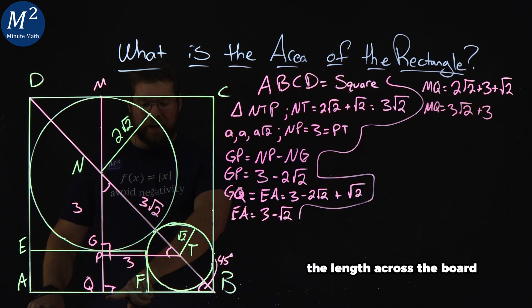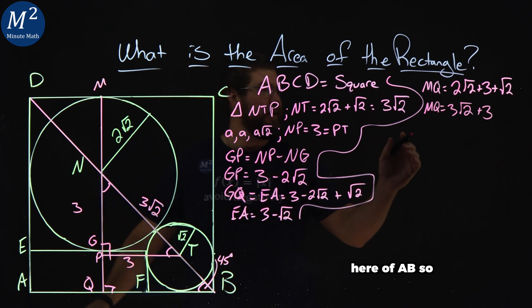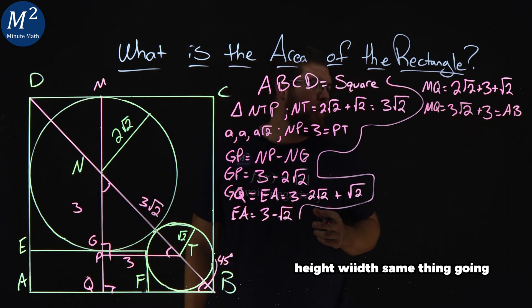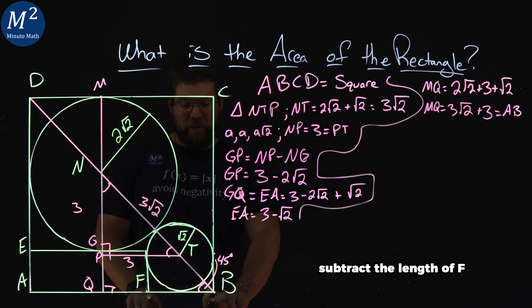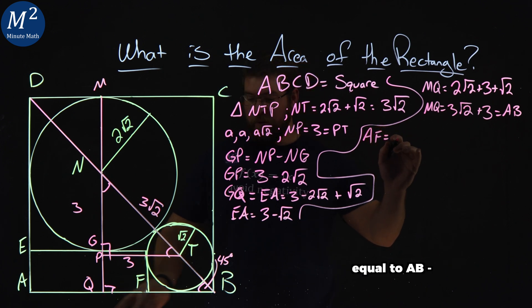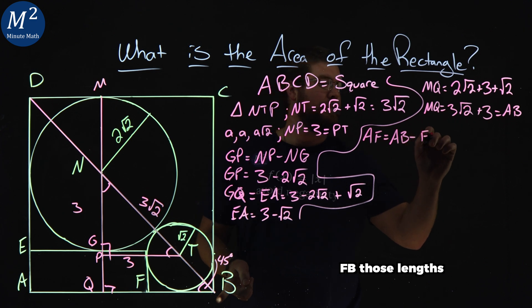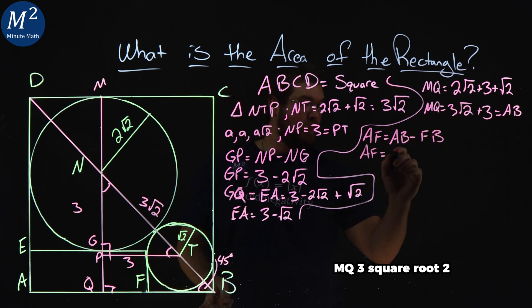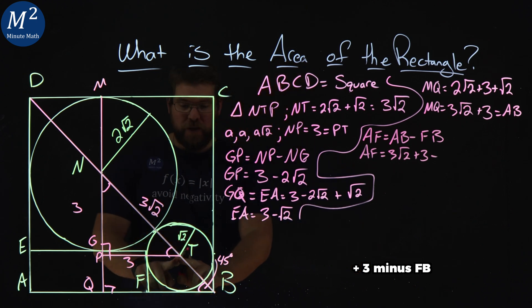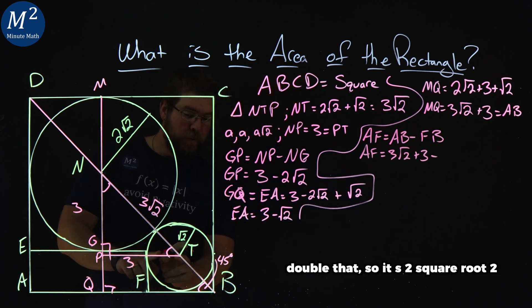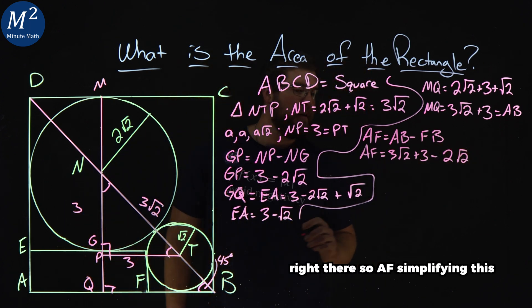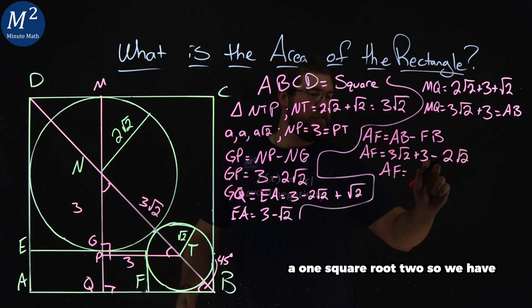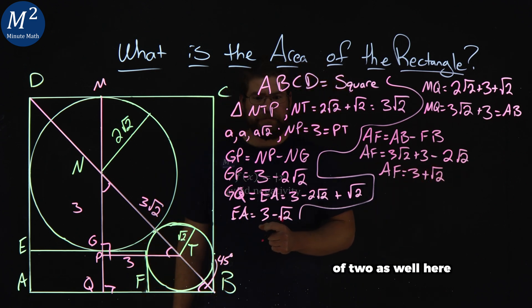And that's equal to the length across the board here of AB. So that's equal to AB, right? Because it's a square. Height, width, same thing going on here. So if we can subtract the length of FB, so AF is equal to AB minus FB. AB, we said was same as MQ, 3√2 + 3, minus FB, which has a radius of √2, that circle, but we double that, so it's 2√2, right there. So AF, simplifying this, we have 3√2 - 2√2 is going to be √2. So we have 3 + √2 as well here.